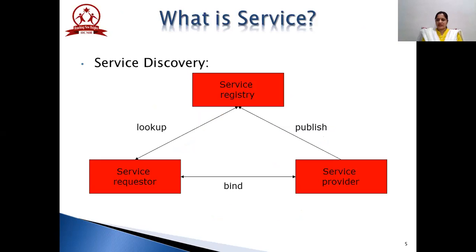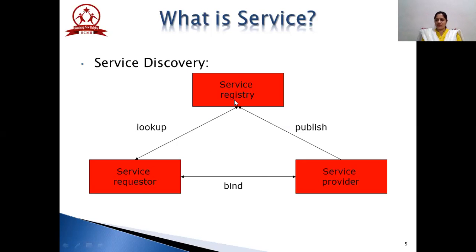A service can be viewed from three different entities' angles: service registry, service requester, and service provider. A service requester typically requests a service from the service provider, provided that particular service is registered or published at a global platform. The service registry is a central repository where all services are registered or published. The requester looks up for the service in the registry, and once found, requests it from the provider, who then binds or responds to that request. So the requester is the consumer and the provider delivers the service.